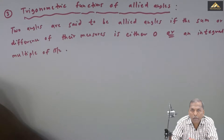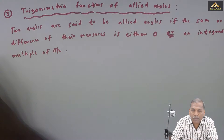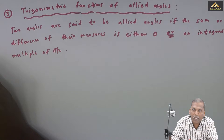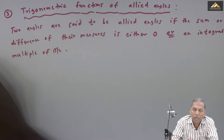This means if the sum or difference is 0 or a multiple of pi by 2 — that is, 90 degrees, 180 degrees, 270 degrees, or 360 degrees — then the two given angles are said to be allied angles.